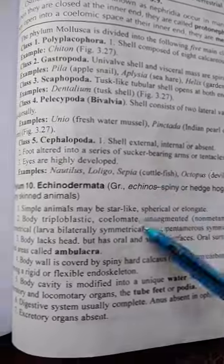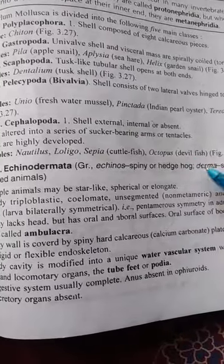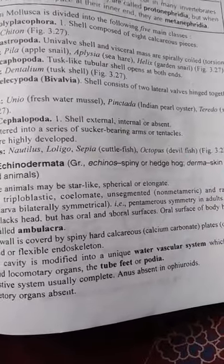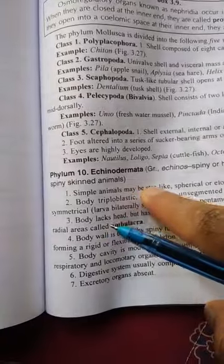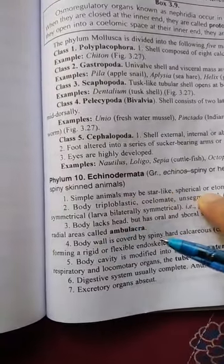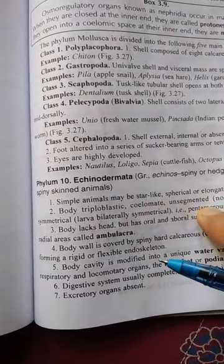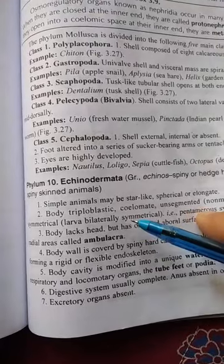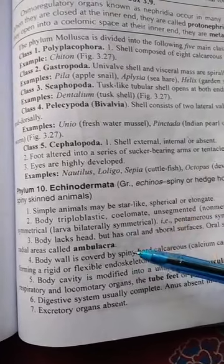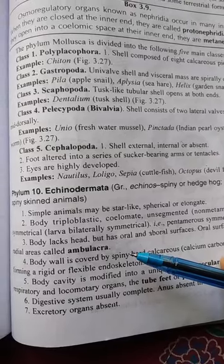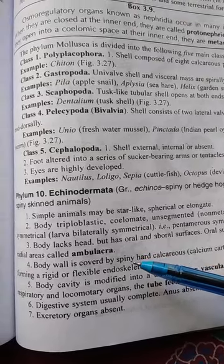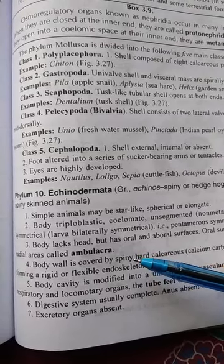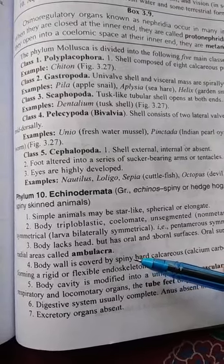Bismillahirrahmanirrahim. Dear students, our topic is Phylum Echinodermata. 'Echino' means spiny or hedgehog, and 'derma' means skin, so they are spiny-skinned animals. Their body shape can be star-like, spherical, or elongated.